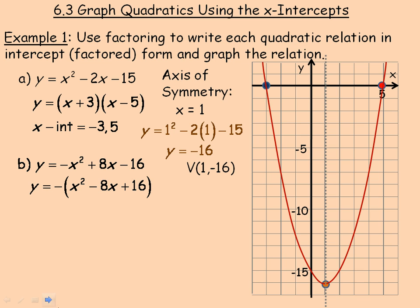They're both negative 4. Negative 4, negative 4, add to negative 8 and multiply to 16. And since they're the same, the two factors are both x minus 4, so we can factor this into negative x minus 4 squared.